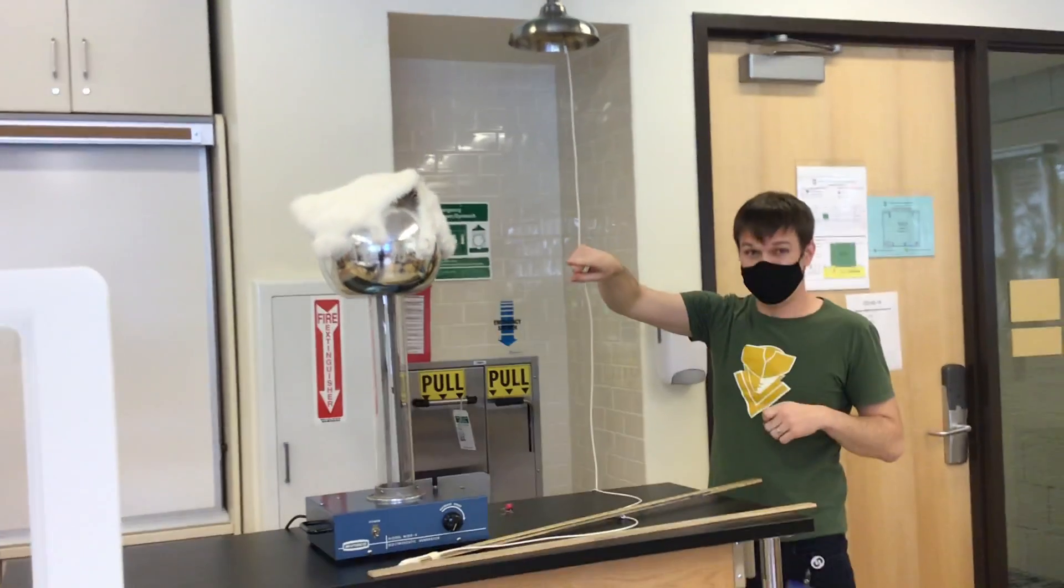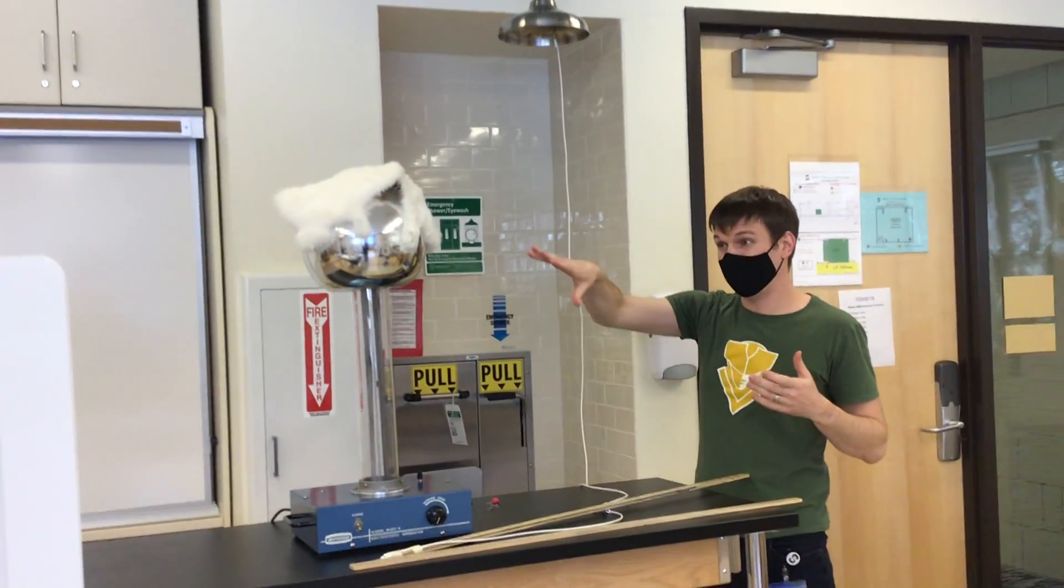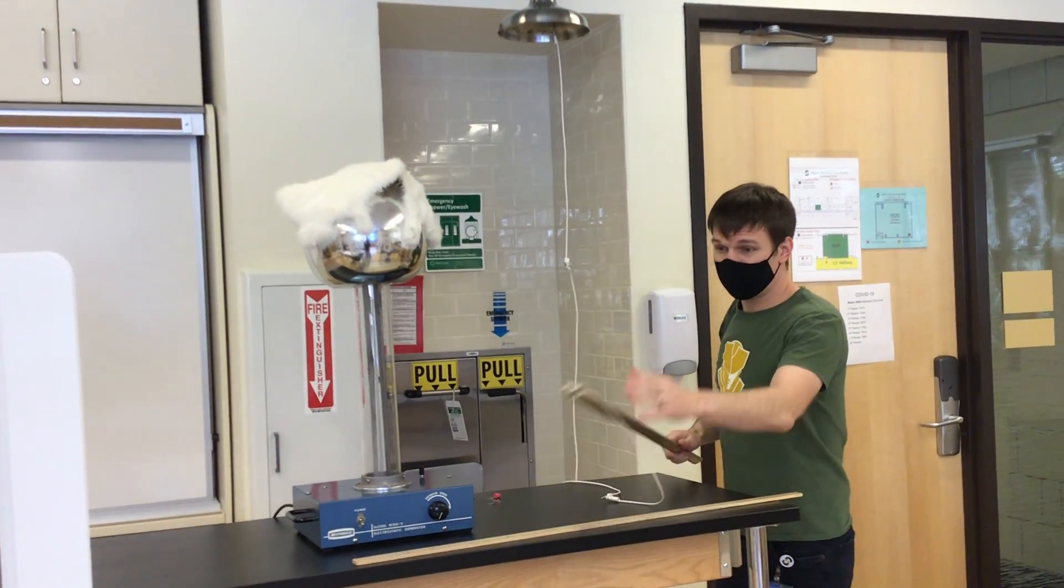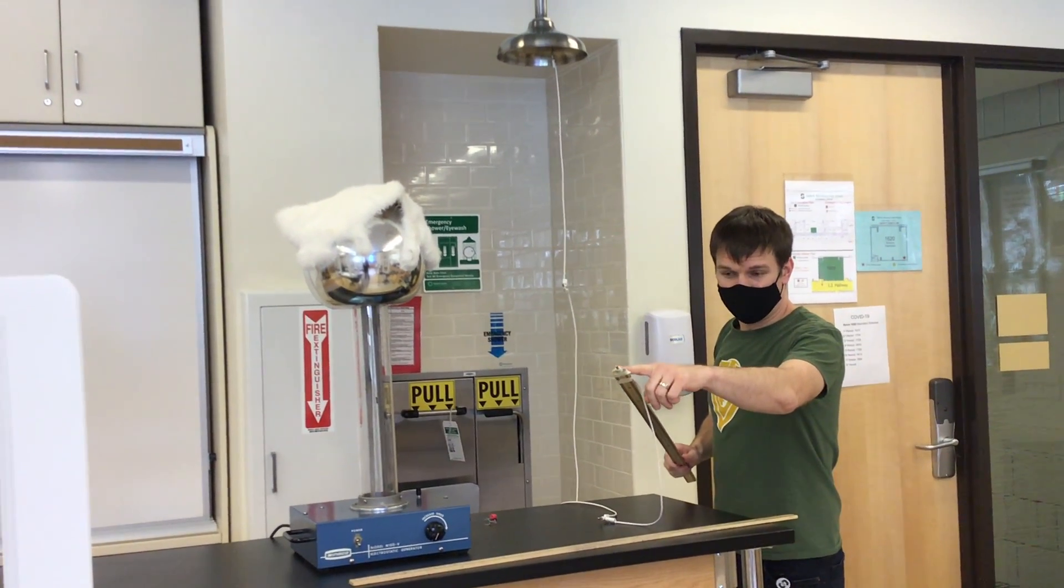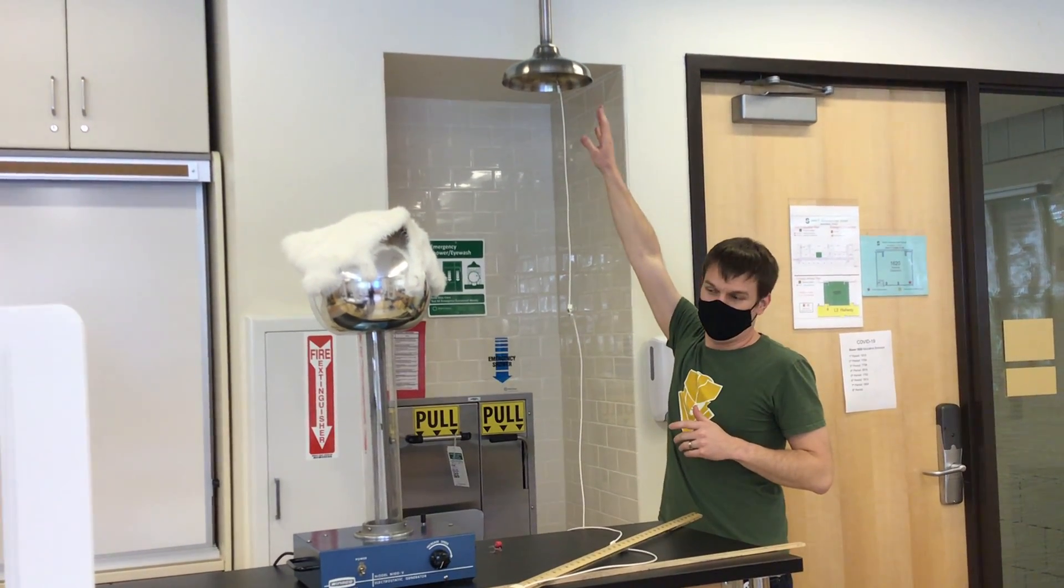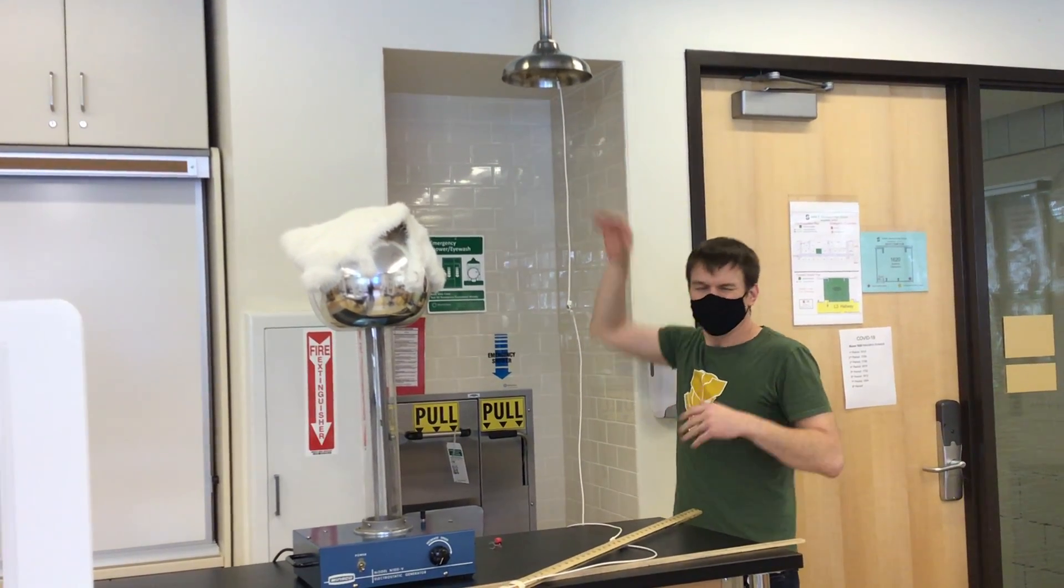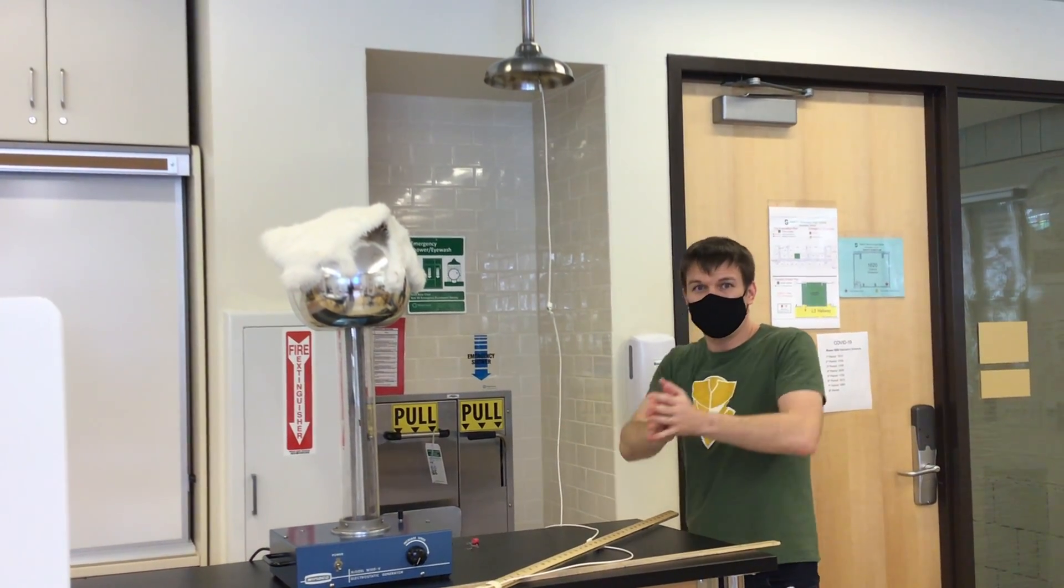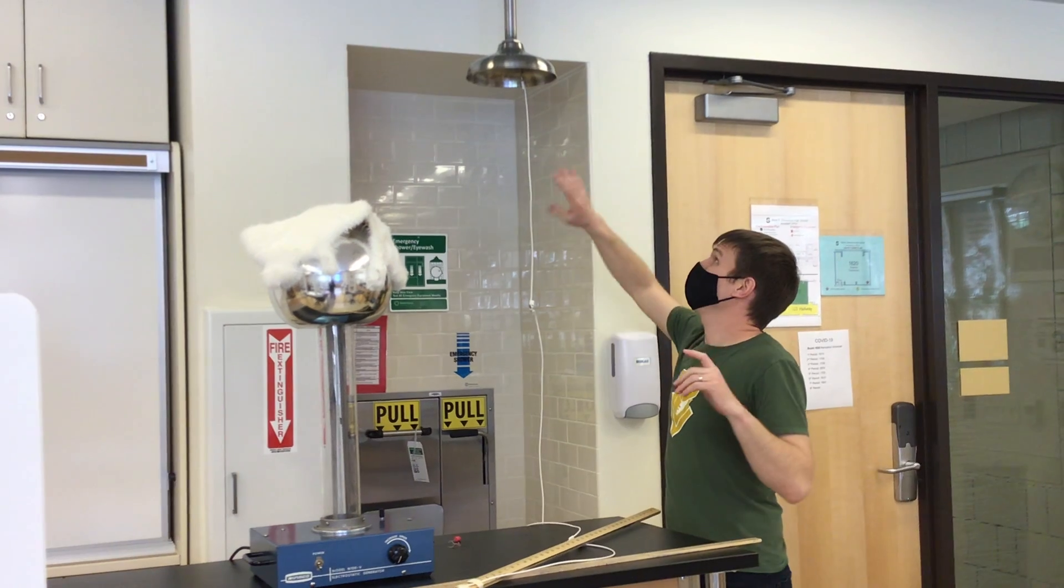Essentially what's happening is this is neutral and that is really, really negative in this case. The electrons want to get away from all the other excess electrons, so they can jump to here. This is a conductor, so they can flow through here. There is so much space that way that they can just keep going and going and going.